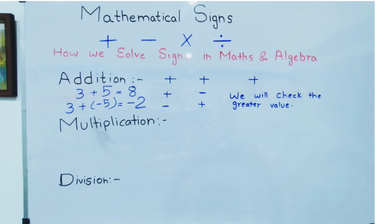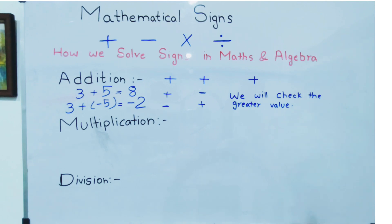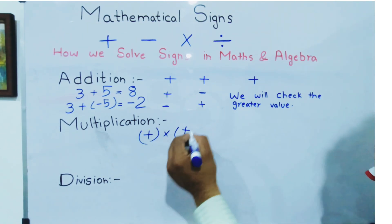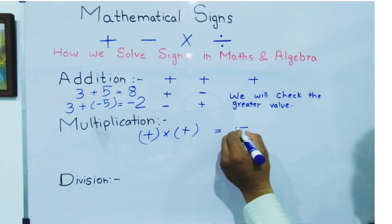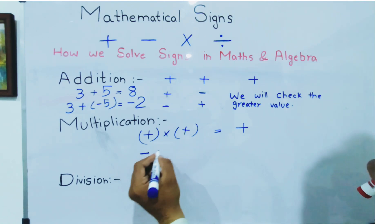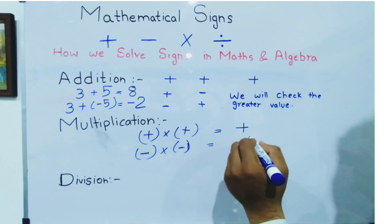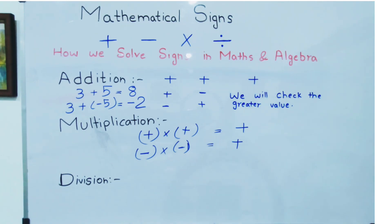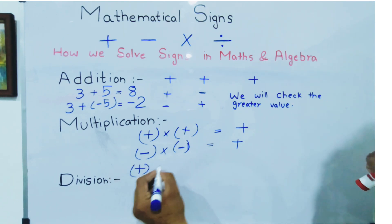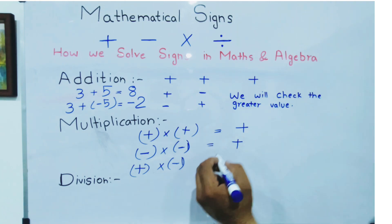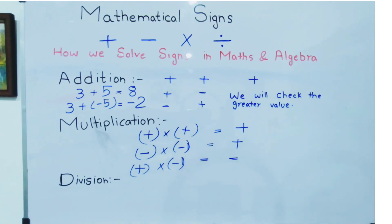The next one is multiplication. In multiplication, if both signs are the same and both values are multiplied with each other, the answer will be positive. If both values are negative, the answer will also be positive. But if both signs are different — the first one is positive and the next one is negative — then the answer will surely be negative.